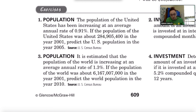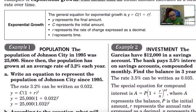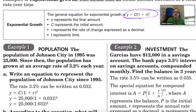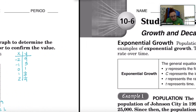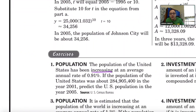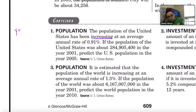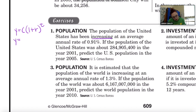We know it is growth because it talks about how the population is increasing — so that's exponential growth. The formula for exponential growth is y equals c times (1 plus r) to the t power, where c is the initial amount, r is your rate of change in decimal form, and t is the amount of time.